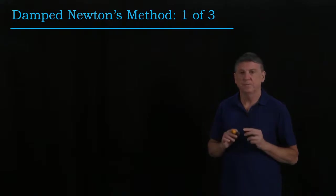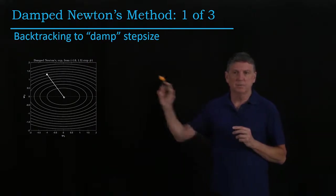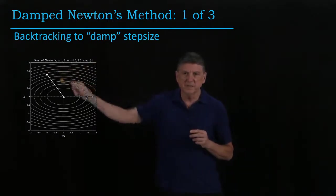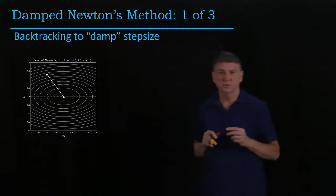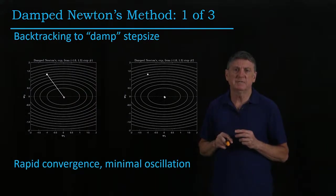Now what happens? What we can see is that it takes a jump from our initial estimate to very, very close to the minimizer. So it doesn't hit it exactly, but it hits it very quickly and with minimal oscillation.